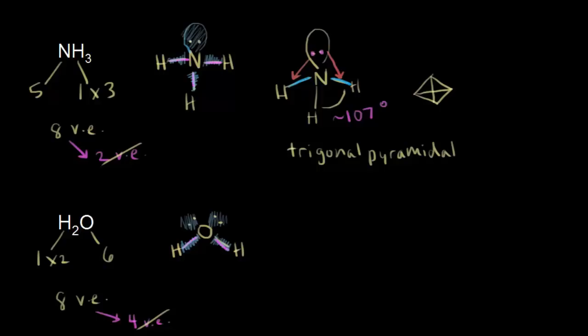However, in this case, let me redraw the water molecule. We have our lone pairs of electrons like that. In this case, we have two lone pairs of electrons. Lone pairs, or non-bonding electrons, take up a little bit more space than bonding electrons, and therefore they're going to repel these electrons a little bit more. That's going to make our bond angle even smaller than before — even smaller than 107 degrees. So this bond angle is listed as approximately 104.5 degrees, or some textbooks say 105 degrees.